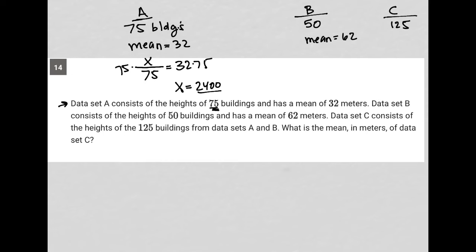This is actually going to become useful because again here I'm going to say y, representing the sum of the heights for all 50 buildings in data set B, divided by 50 is equal to 62. Which of course then I can multiply both sides by 50 in order to discover what the sum of those heights are for data set B. 62 times 50 is 3100, so y is equal to 3100.